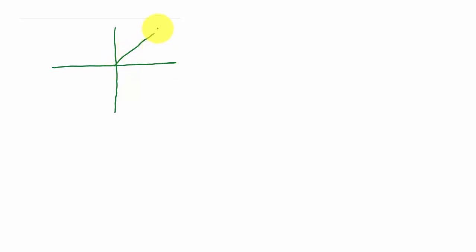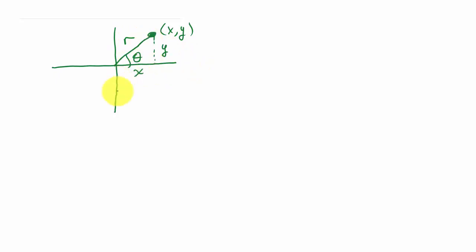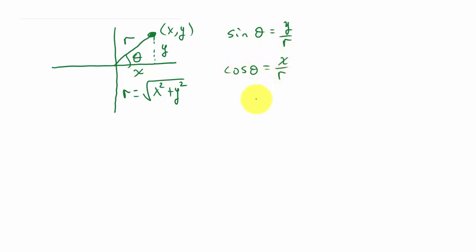If we have some angle — let's call it theta — there's a point here, and it's the point (x, y). This distance from here to here would be our x distance, this would be y, and this would be r. We know that r is equal to the square root of x squared plus y squared — you can get that using the Pythagorean Theorem. So we know that sine of theta is y over r, cosine theta is x over r, and tangent theta is y over x.